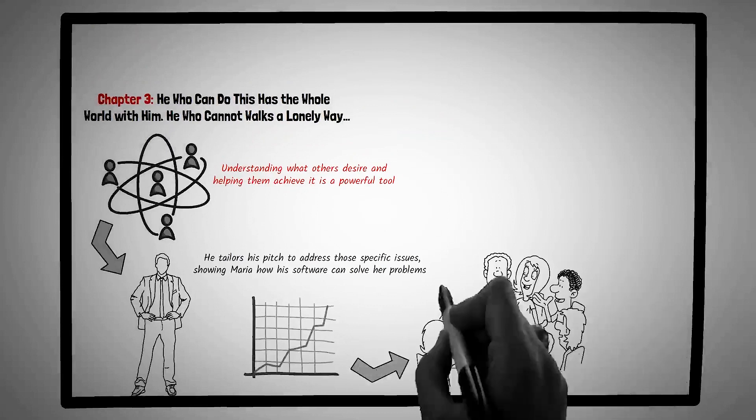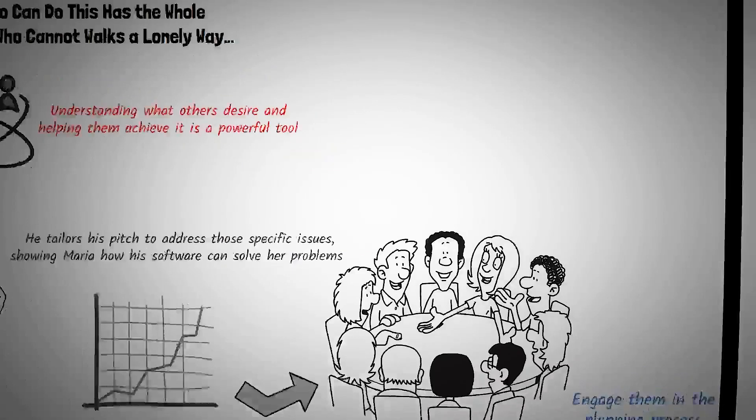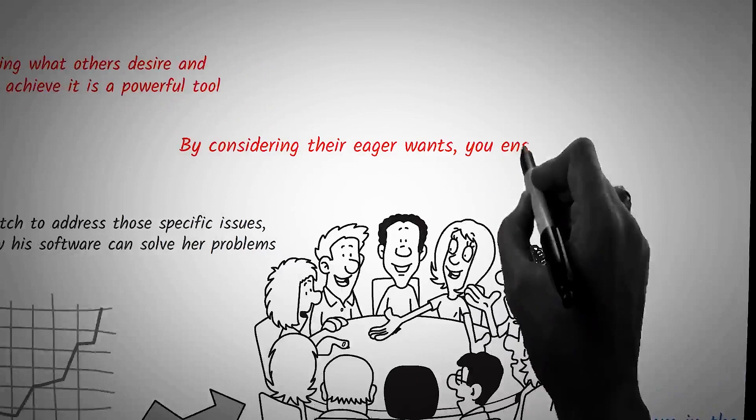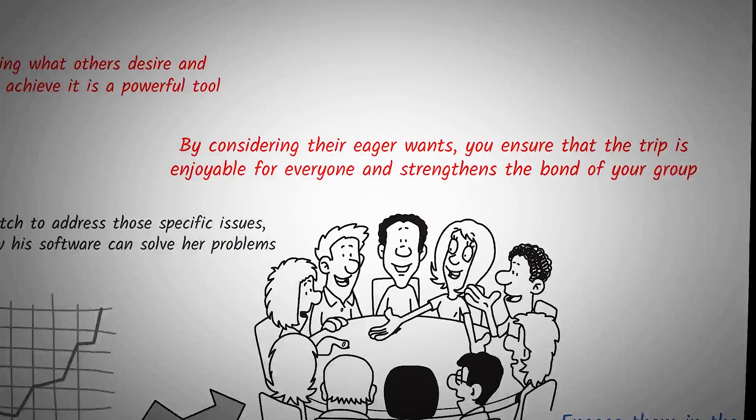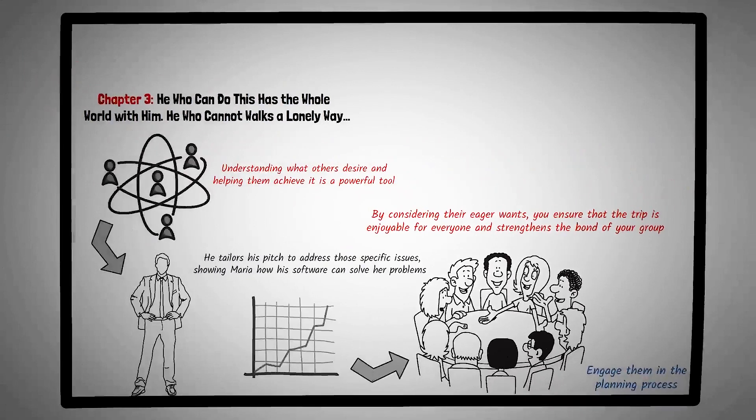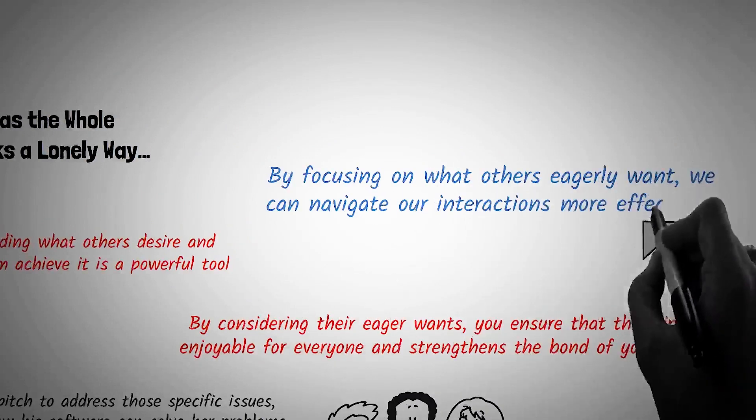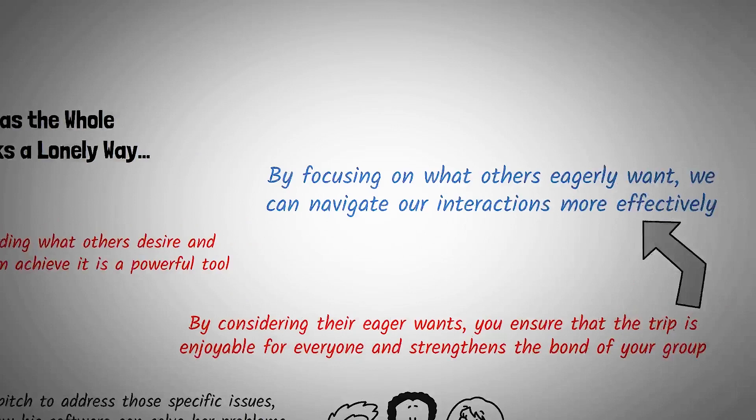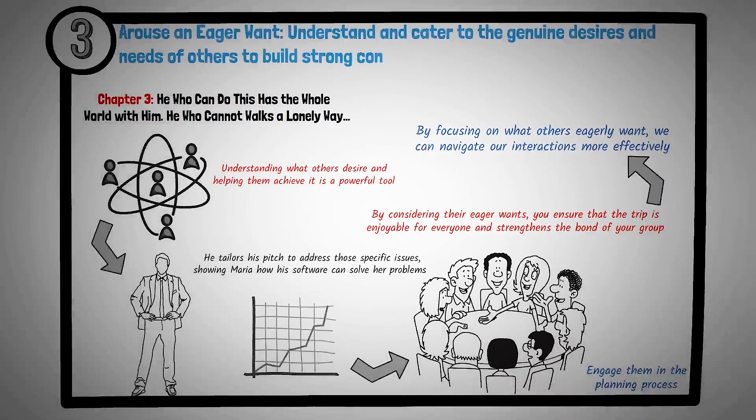Suppose you're planning a weekend getaway with friends. Instead of deciding everything on your own, engage them in the planning process. Ask them about their preferences, the activities they're eager to try, or the places they want to visit. By considering their eager wants, you ensure that the trip is enjoyable for everyone and strengthens the bond of your group. The ability to tap into the desires and needs of others isn't just a skill, it's an art. By focusing on what others eagerly want, we can navigate our interactions more effectively, fostering mutual understanding and collaboration. Principle number three is arouse an eager want. Understand and cater to the genuine desires and needs of others to build strong connections.